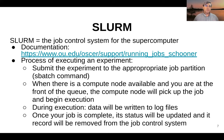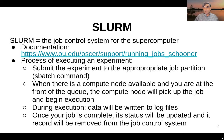Once a job is sitting in a partition and the appropriate compute node becomes available and you are at the top of the queue for that partition, then the compute node will pick up your job and begin to execute. While execution is happening, there are a number of log files generated that you can view on the fly. Presumably your experiment will also write out its own files when it's done. Once the job is complete, the status will be updated within SLURM, and you can see that it has completed. At that point, your job will be removed from the job control system.